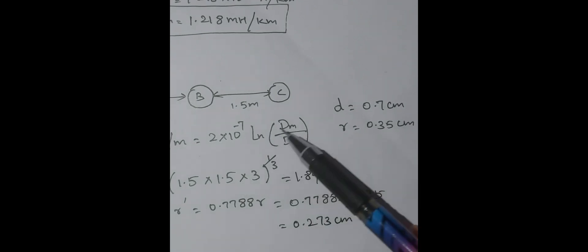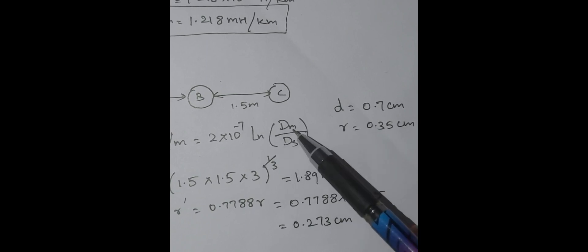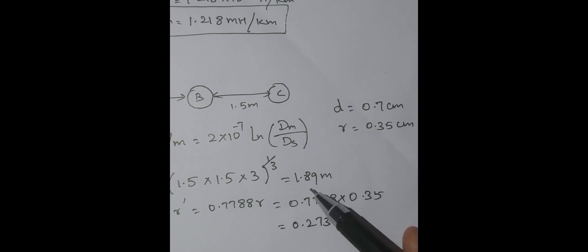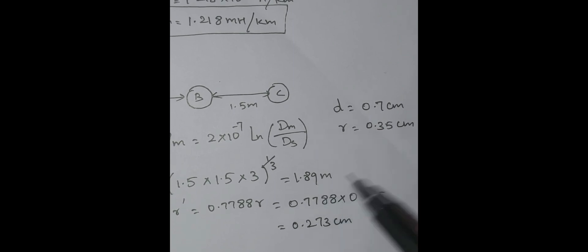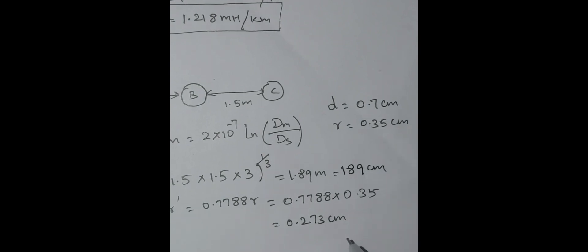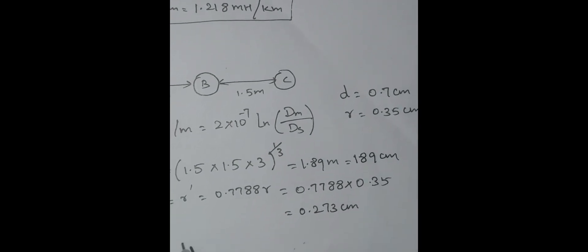As I already told, the ln of DM by DS. Random centimeter or random meter. So it is better to convert this 1.89 meter into centimeter. Either multiply by 100, you will get into centimeter. So 189 centimeter. It is already 0.273 centimeter.